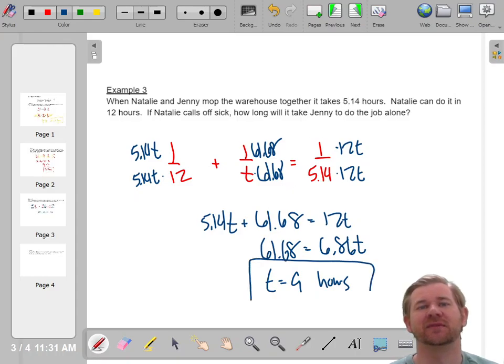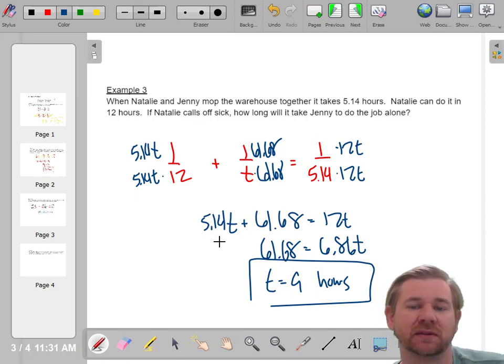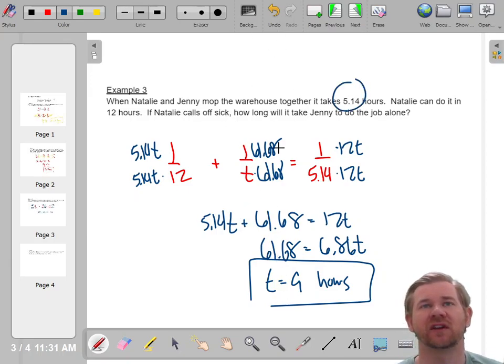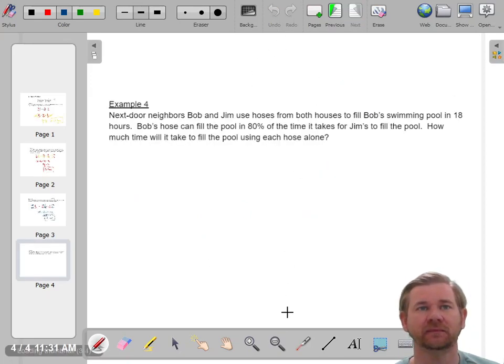I think that's the reason why that's that decimal. It's because it's so close to 9. So if she did it by herself, 8.99, which we'll just say is 9 hours. It takes one of them 12 hours. It takes the other 9 hours. If they work together, they can do it in 5.14 hours.